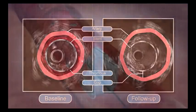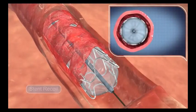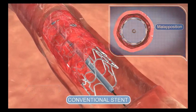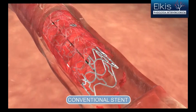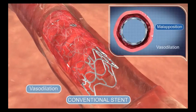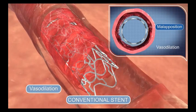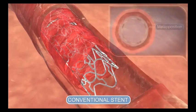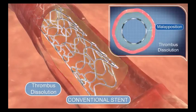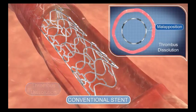How could that possibly happen? First, as the balloon that delivers a conventional stent is deflated, the stent's natural tendency for recoil could result in initiating such a gap between stent struts and the vessel wall. Second, as the vessel relaxes, vasodilatation increases, resulting in further expansion of this gap. And finally, as thrombus dissolves over time, the gap between the struts and the wall becomes even larger, increasing the stent's malapposition.